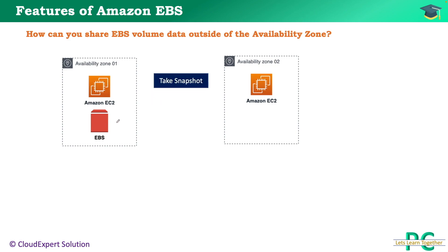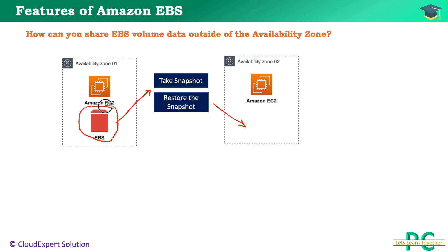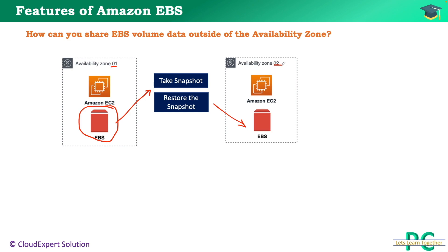In that case, first we will take a snapshot of that EBS volume, then we will restore the snapshot to the other availability zone. That means you are taking the snapshot from availability zone 1 and restoring that EBS volume to availability zone 2. Once you have restored that EBS volume, you can attach it with the EC2 instance in the other availability zone. As of today, this is the only method that allows cross availability zone data sharing of an EBS volume.